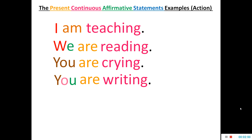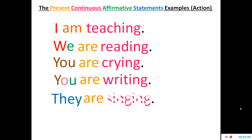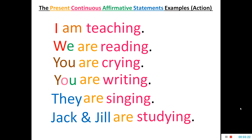Then 'you are crying' and 'you are writing'. Note that 'you' is both singular and plural in English grammar, and 'are' is always used with 'you' in the present continuous tense. With the third person plural subject 'they', we also use 'are' and then a V4 — for example: 'They are singing.' Also, 'Jack and Jill' — more than one name — becomes a plural subject, so: 'Jack and Jill are studying.'